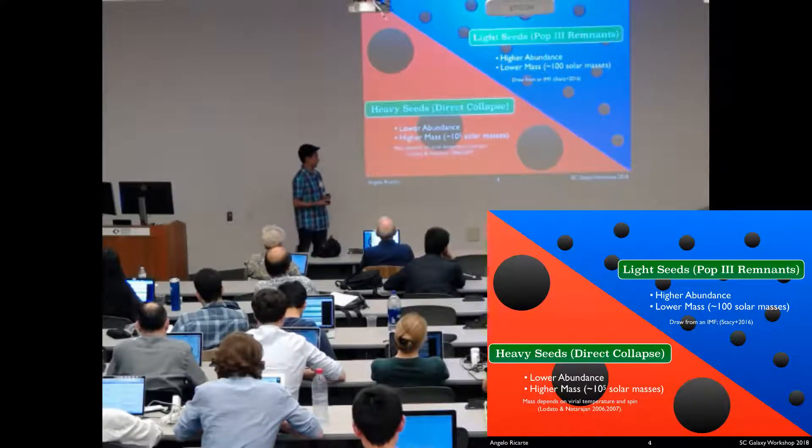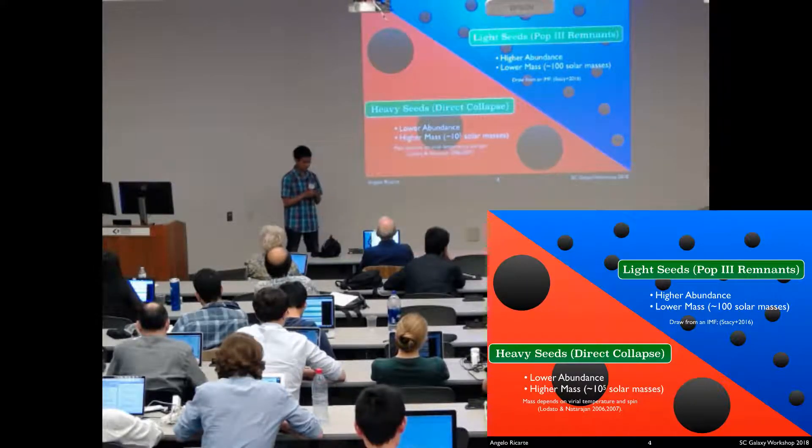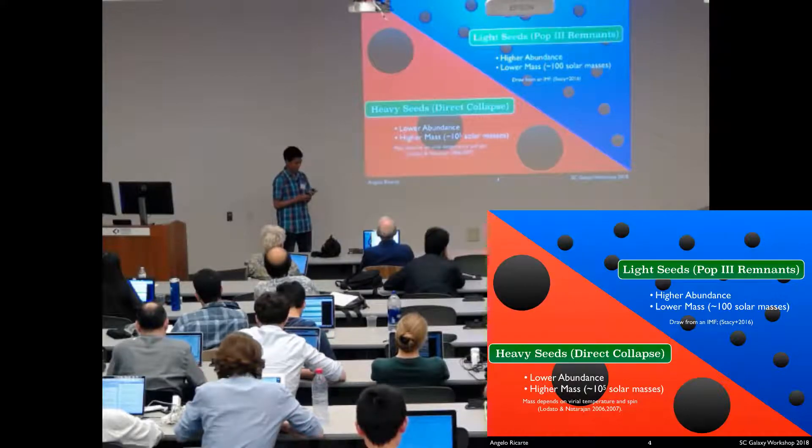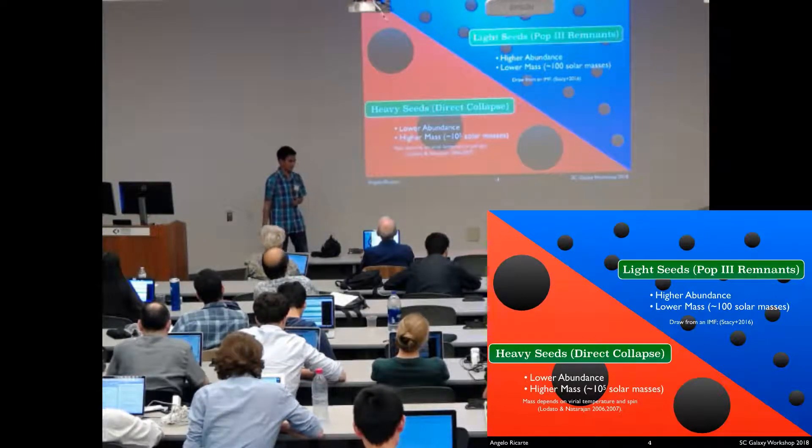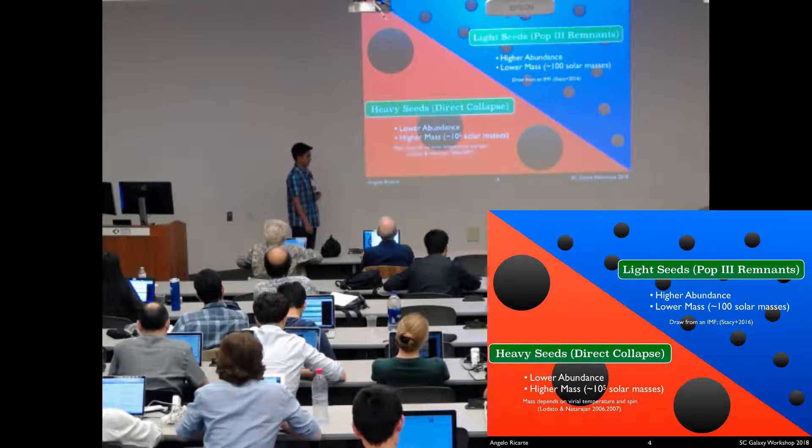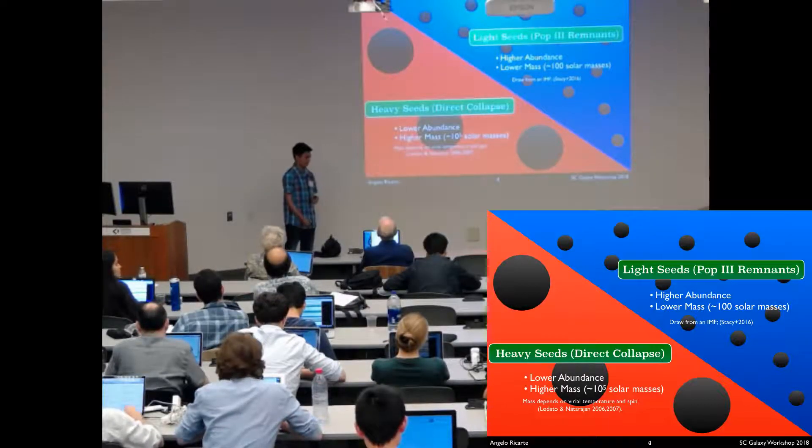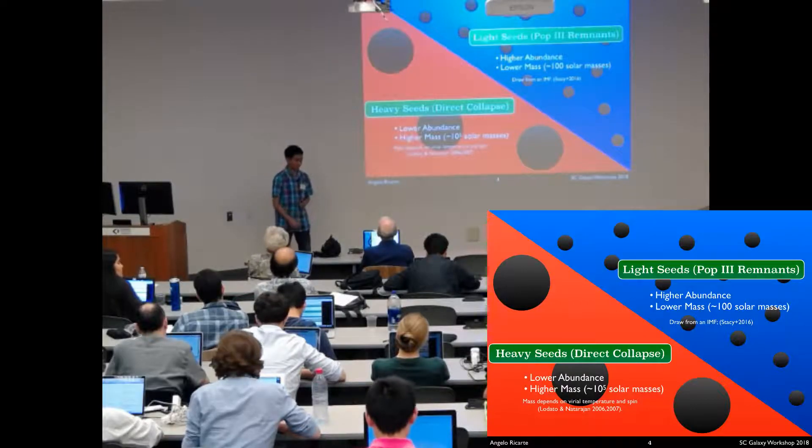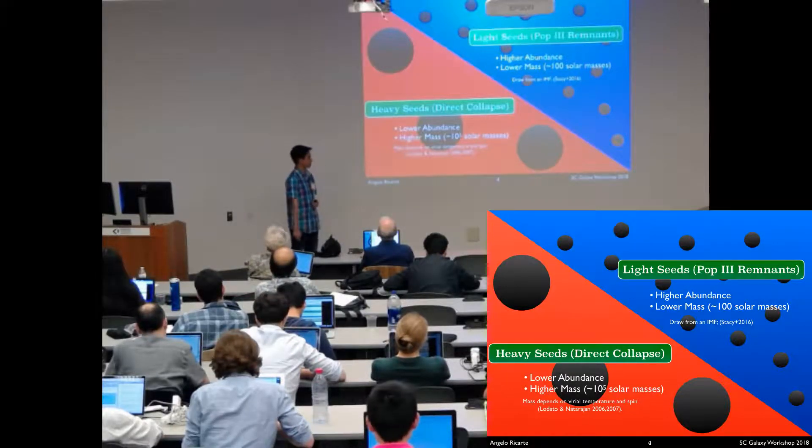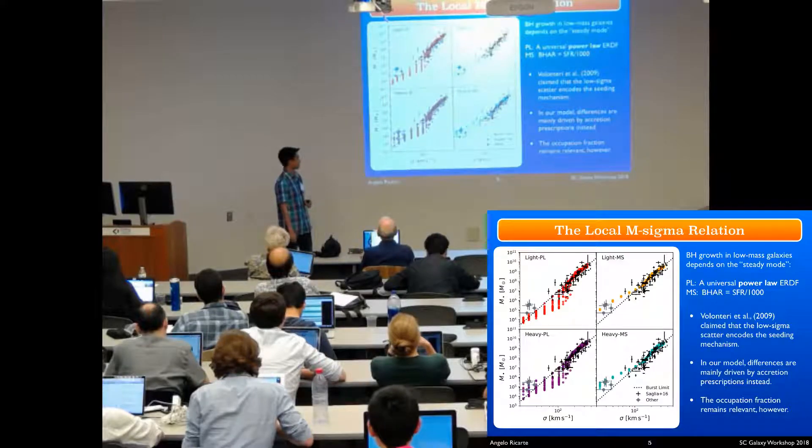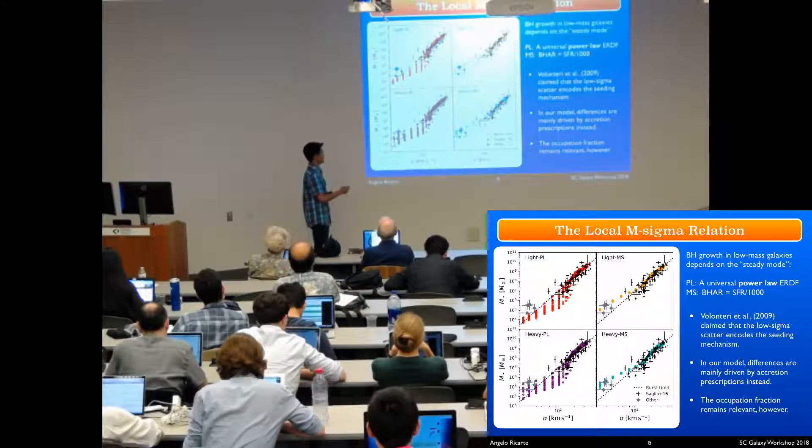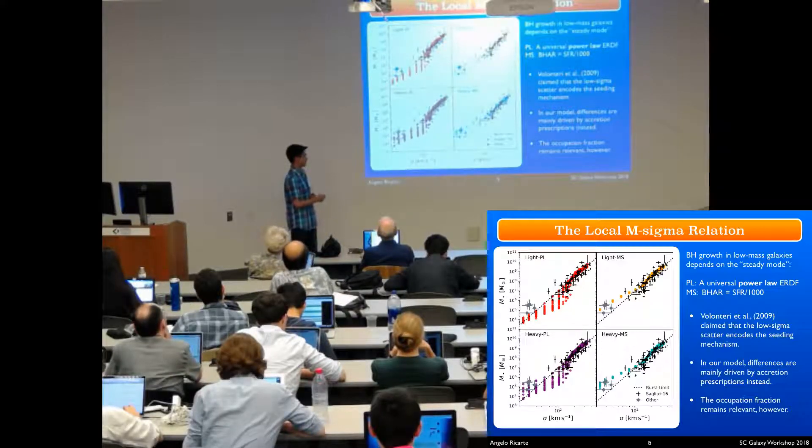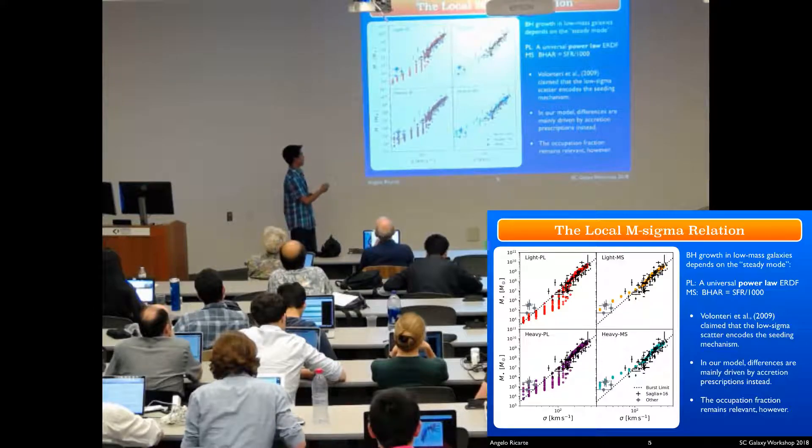Let's take a look at some of the signatures that may exist in observations existing or to come, which may contain some signatures that encode the seeding properties. As we've already seen from Colin's talk, these are going to exist both at low masses currently in the current epoch and at high redshifts. Here's the local M-sigma relation for the two classes of models. Light seeds are on top and those are always the warm colors. Heavy seeds are on bottom and the cool colors. There are also two different columns here.